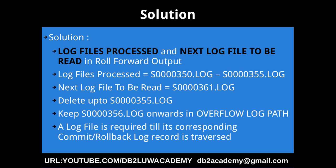For example, you might find that the log files processed is 350.log to 355.log, but the next log file to be read is 361. So you can see a gap there — 356, 357, 358, 359 — those log files exist in between.